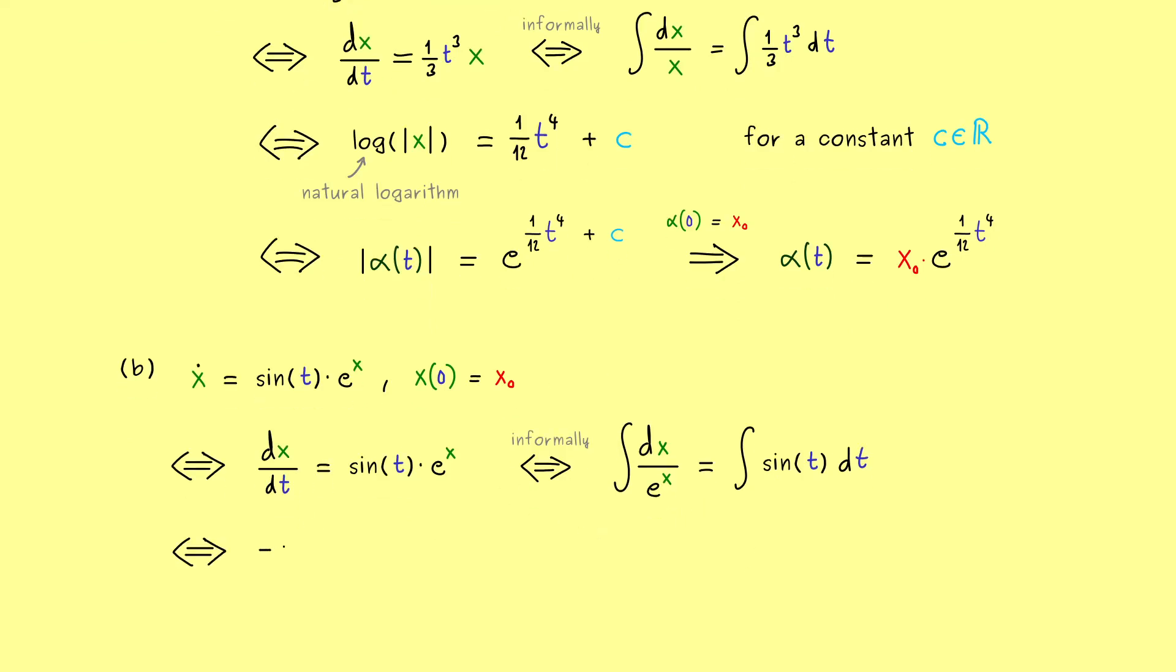On the left-hand side, we have minus e to the power minus x. And on the right-hand side, we have minus cosine of t. And again, please don't forget to add our constant c here.